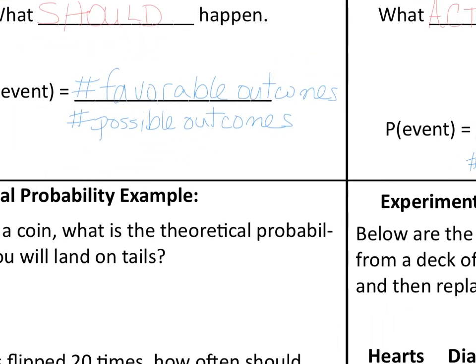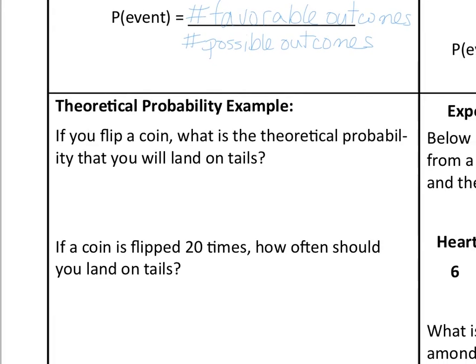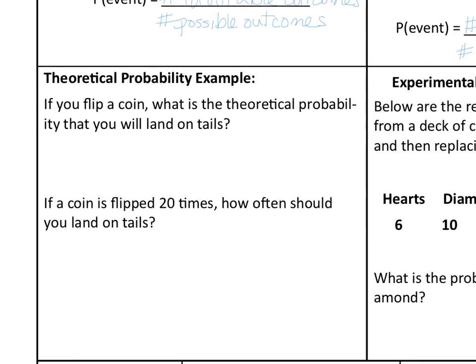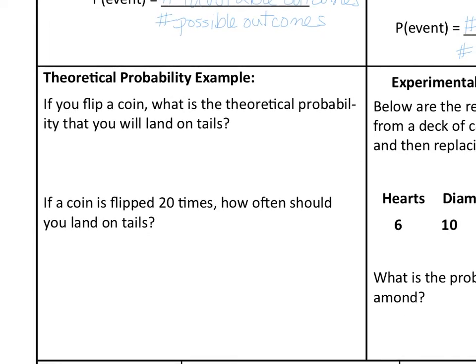Now we're going to look at an example of each. In theoretical probability, if you flip a coin, what is the theoretical probability that it will land on tails? The answer would be one-half. The reason is because one side has tails and there's a total of two sides on the coin. So if I flipped it 20 times, we could expect that it would land half of the time, and half of 20 would be 10.